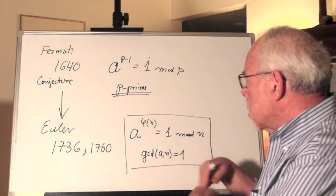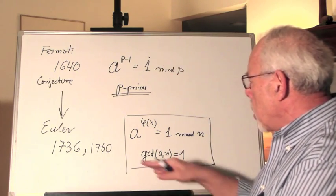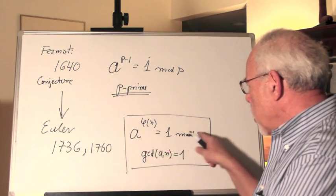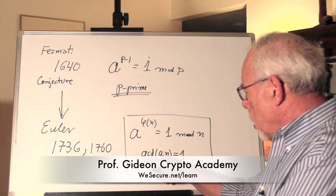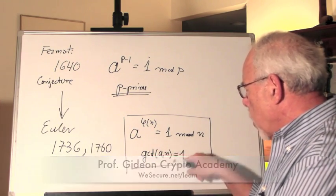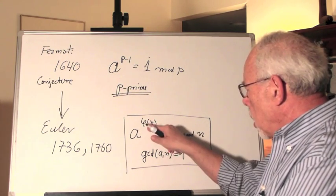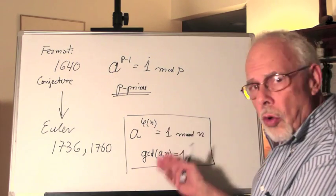Euler generalized Fermat's theorem to the following, saying any two numbers a and n that are co-primes, greatest common divisor is 1, satisfy this relationship where this phi of n, called Euler function,